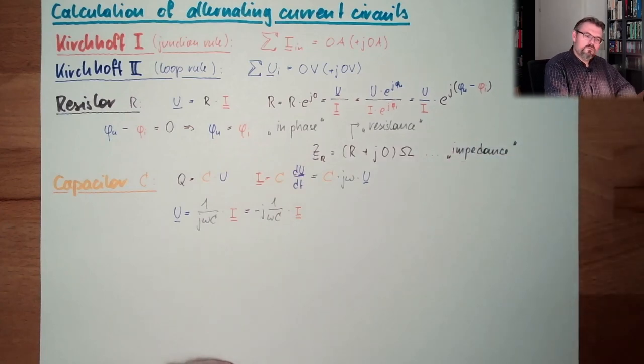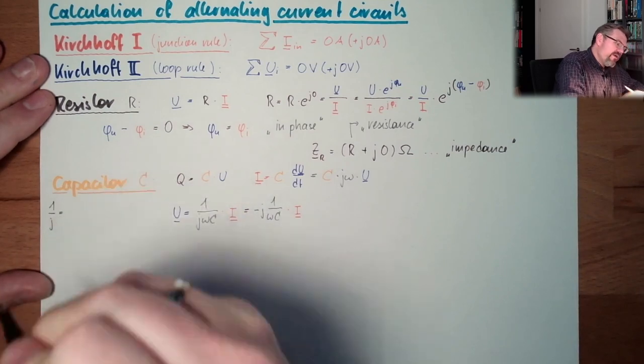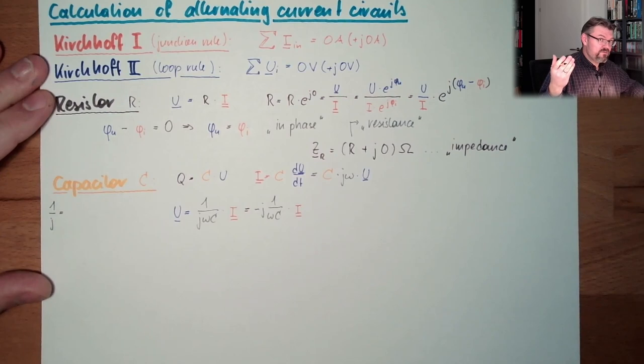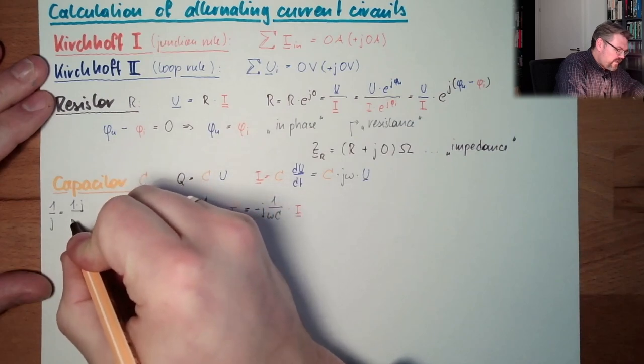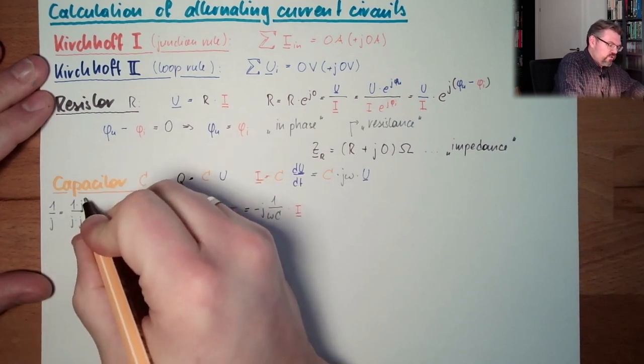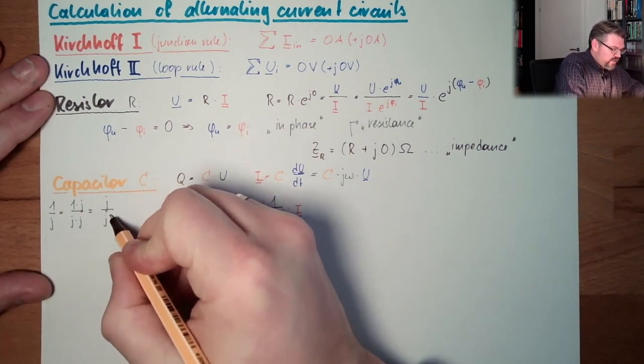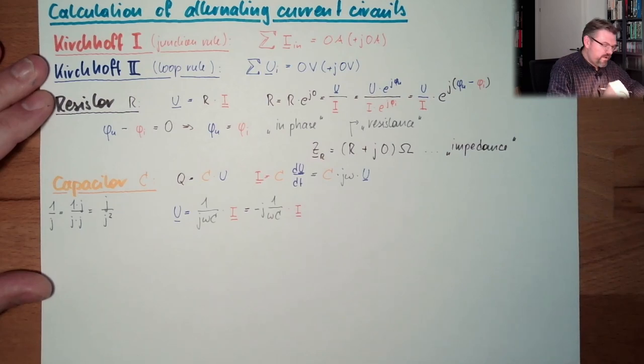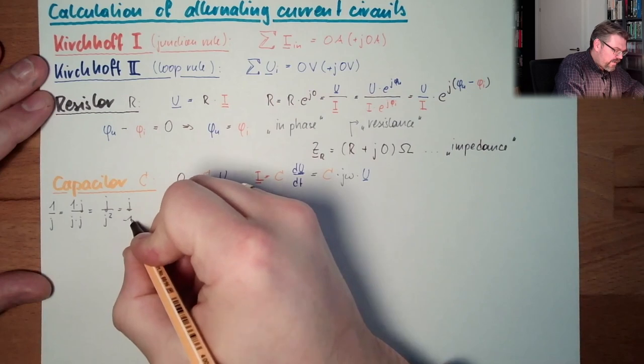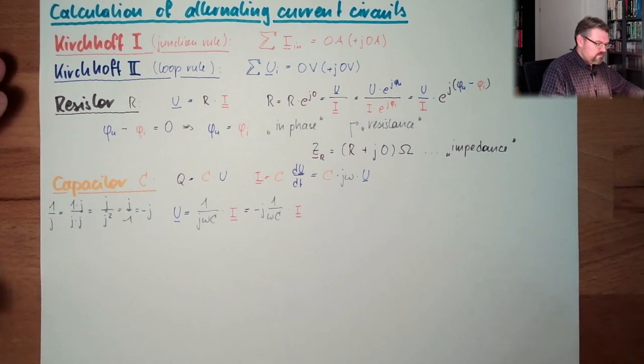Want proof? OK. 1 divided by J. And now, I extend the numerator and the denominator with J. 1 multiplied by J, J multiplied by J. J divided by J squared. And J squared, since J is the square root of minus 1, J squared is minus 1. So we have here J divided by minus 1. And this equals minus J. Now you know.